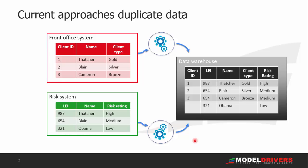Not only that, once it arrives in the data warehouse, we have the data hard-coded into a particular viewpoint. A new business requirement means a new viewpoint is required, and we have a problem because we now have to build another data warehouse. So data is duplicated, duplicated again, and transformed — all very expensive.